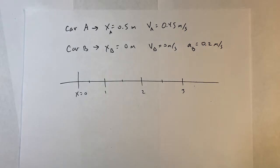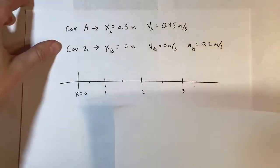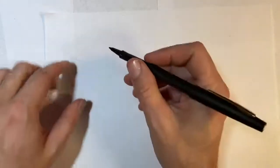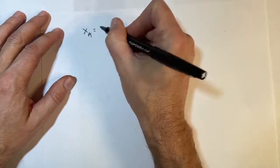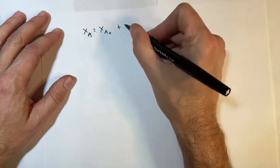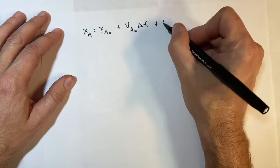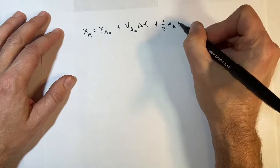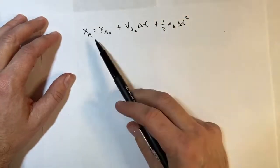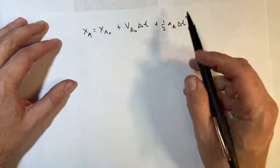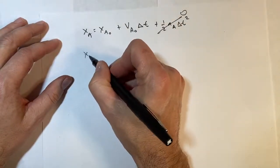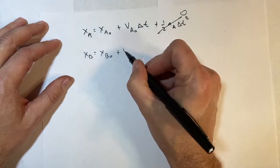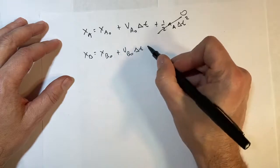Starting with a fresh sheet of paper: from our definition of kinematics — the definition of average velocity and acceleration — we get the kinematic equation. For car A: x_A equals x_A0 plus v_A0 times delta t plus one-half a_A times delta t squared. Since car A has zero acceleration, that last term drops out. We do the same for car B: x_B equals x_B0 plus v_B0 times delta t plus one-half a_B times delta t squared.